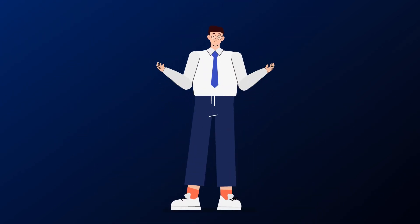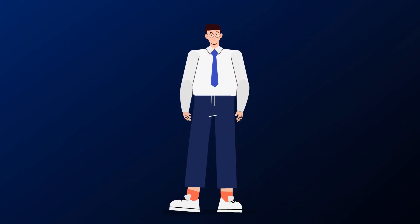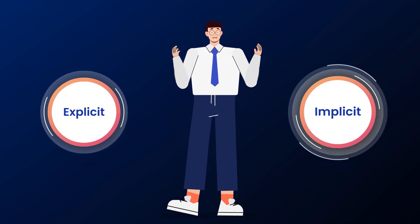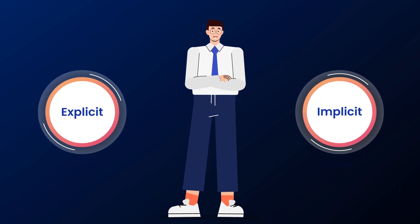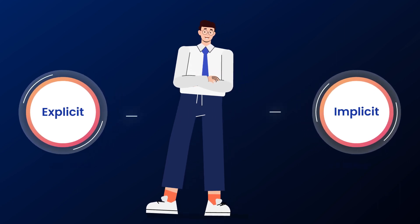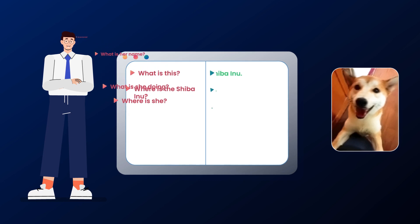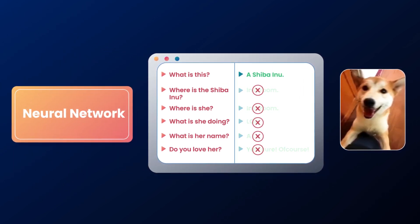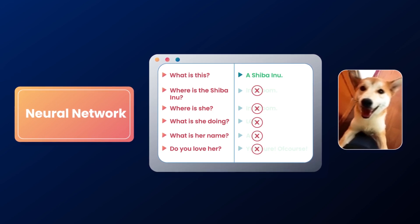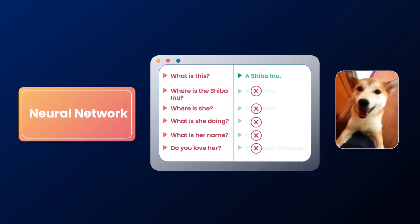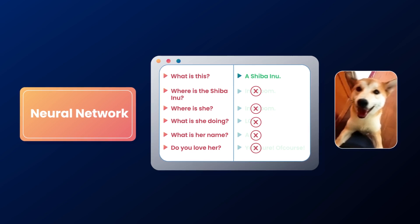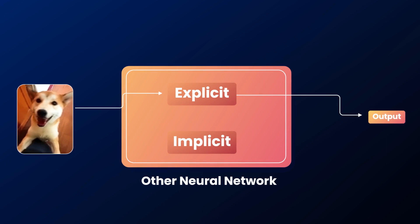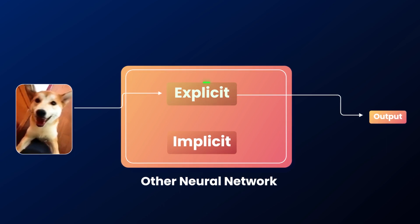Humans can develop experience through regular learning or subconsciously — that is, explicit or implicit knowledge. Using their implicit knowledge, humans can effectively process the same information in multiple ways. For example, we can easily answer various questions using the same data. The same isn't true for neural networks. A trained CNN model can usually only fulfil a single objective and is poorly adaptable to other problems. It only uses the features generated by the network based on the given input, which corresponds to explicit knowledge.